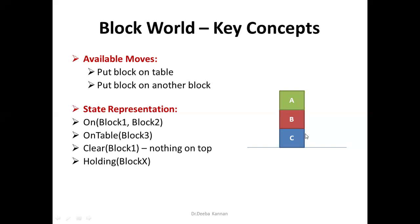This is the representation: on(B, C). B is on top of C. That is how we can do representation. B is on top of C, A is on top of B. So one block is on the table, or the block is on top of another block, or the block is on the arm head. This is the state representation.